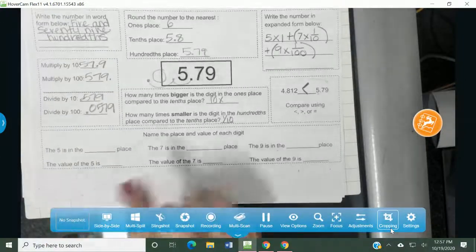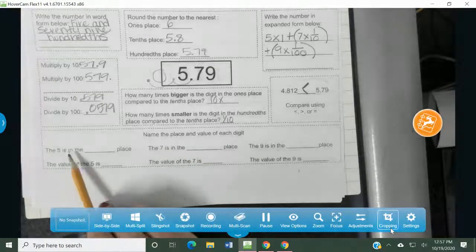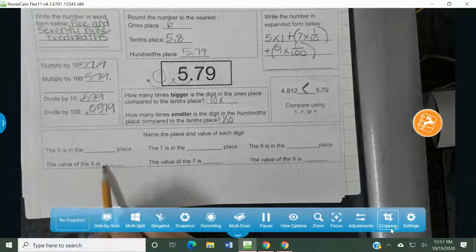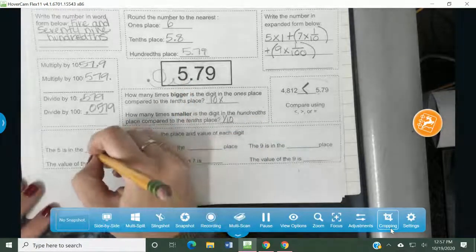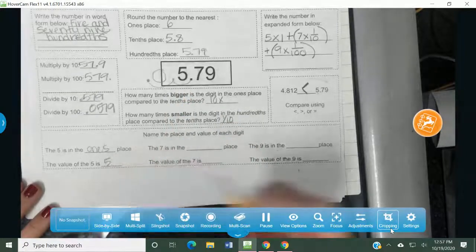All right, now we're at the bottom. It says, name the place and the value of the following digits. The five is in the blank place. The value of the five is blank. All right, so the five is right here. It's in the ones place. I'm going to write ones and the value of the five is just five because it's in the ones place.